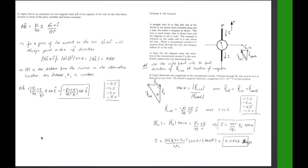For the problem it says a straight wire 15 meters long oriented along the y axis lies below the compass as shown. The wire is much longer than is shown here and the diagram is not drawn to scale. The compass is centered on the origin and is 4 millimeters above the wire. When a conventional current of I amperes flows through the wire the compass deflects 8 degrees to the west.